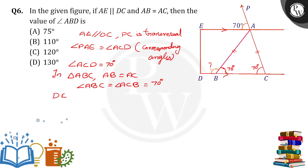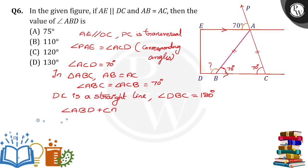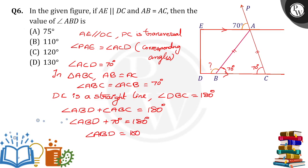Angles on a straight line DC sum to 180 degrees. So angle ABD plus angle ABC is equal to 180 degrees. Angle ABD plus 70 degrees equals 180 degrees, so angle ABD is equal to 180 minus 70, which gives us 110 degrees. So option B is the right answer. Thank you.